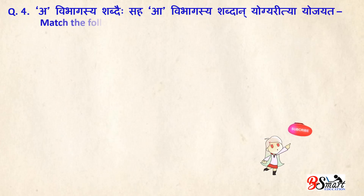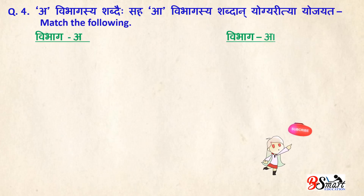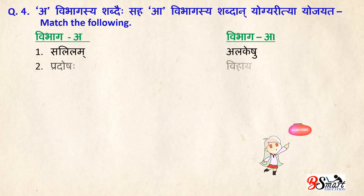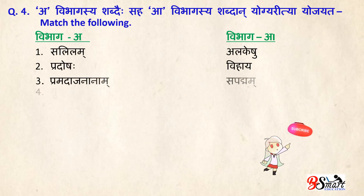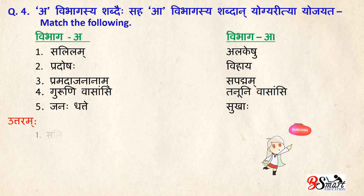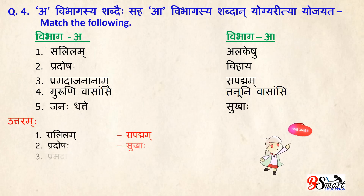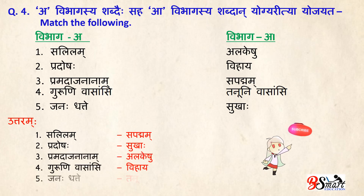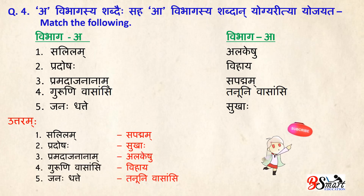Question No. 4: Match the following. Salilam means Sa Padmam. Pradoshah means Sukhaha. Pramadajanam means Alkeshu. Guruni Vasansi means Vihaya Janah Dhatte, which means Tanuni Vasansi.